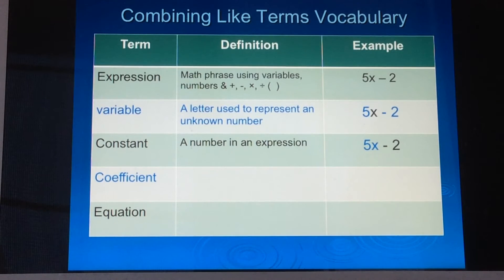Coefficient is the next term. And a coefficient is the number that's being multiplied by a variable. And it's always going to be in front of the variable it's multiplying by. So again, in the example 5x minus 2, the 5 is going to be the coefficient.